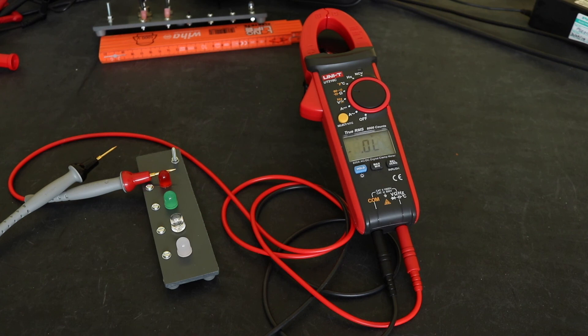So yeah, just a little update on the UT216C there. As I say, it just seems to have a poor continuity function built into it and you don't get any improvement by using better quality leads. So that's it for this video. Thanks for watching, hope you found it useful, and I'll see you again in the next one.